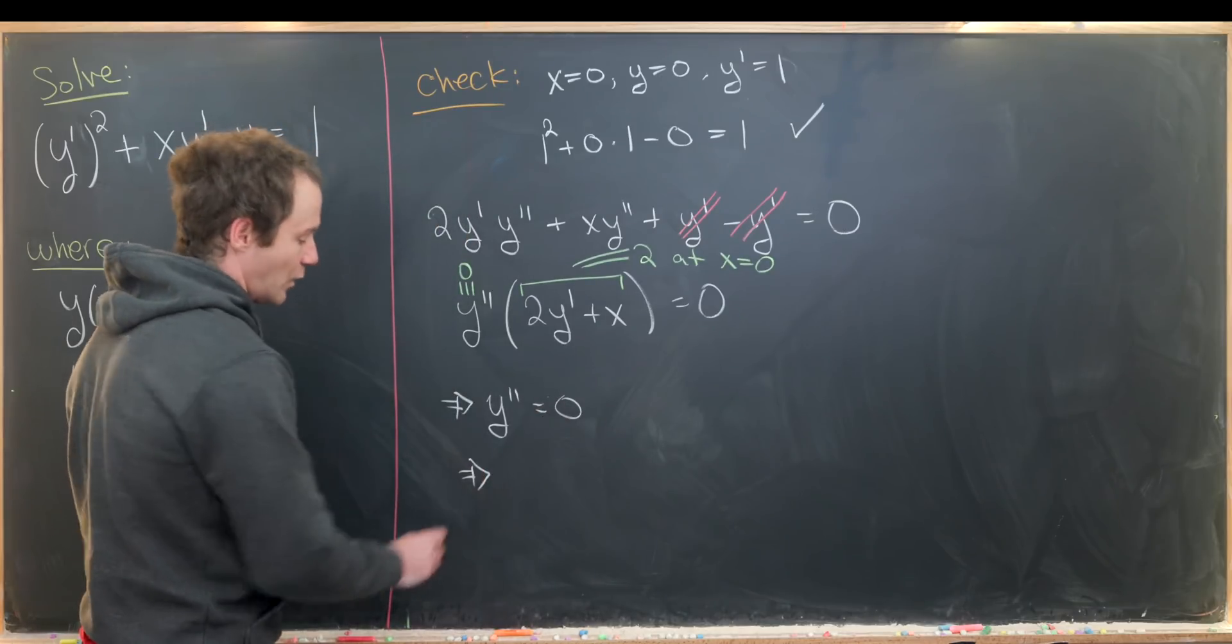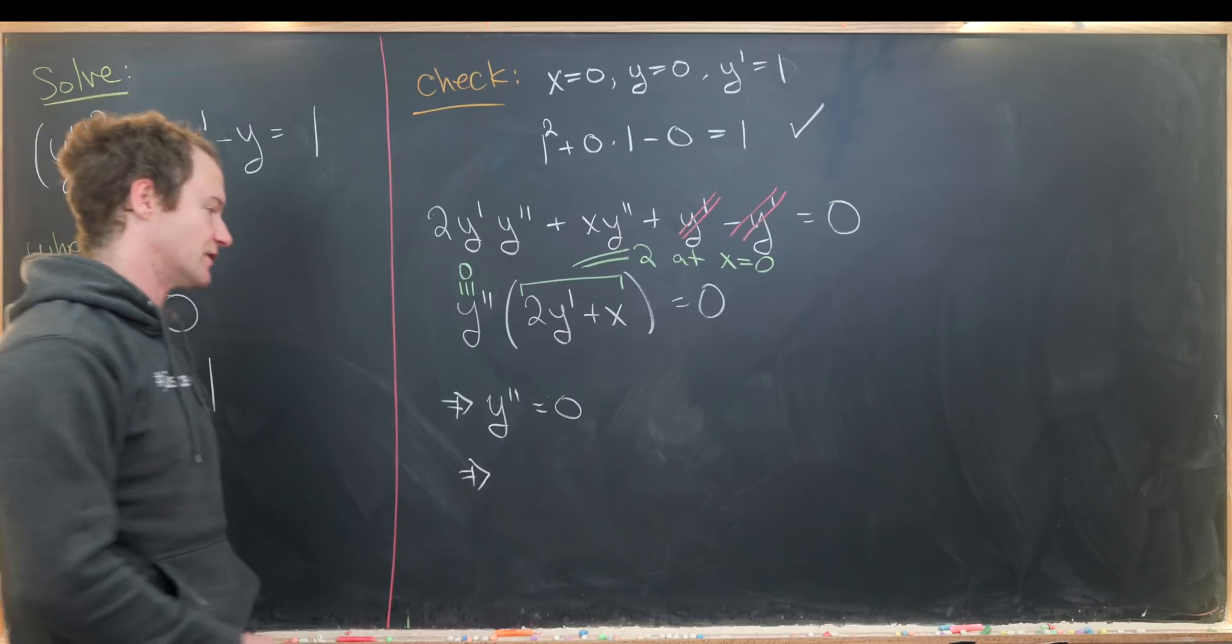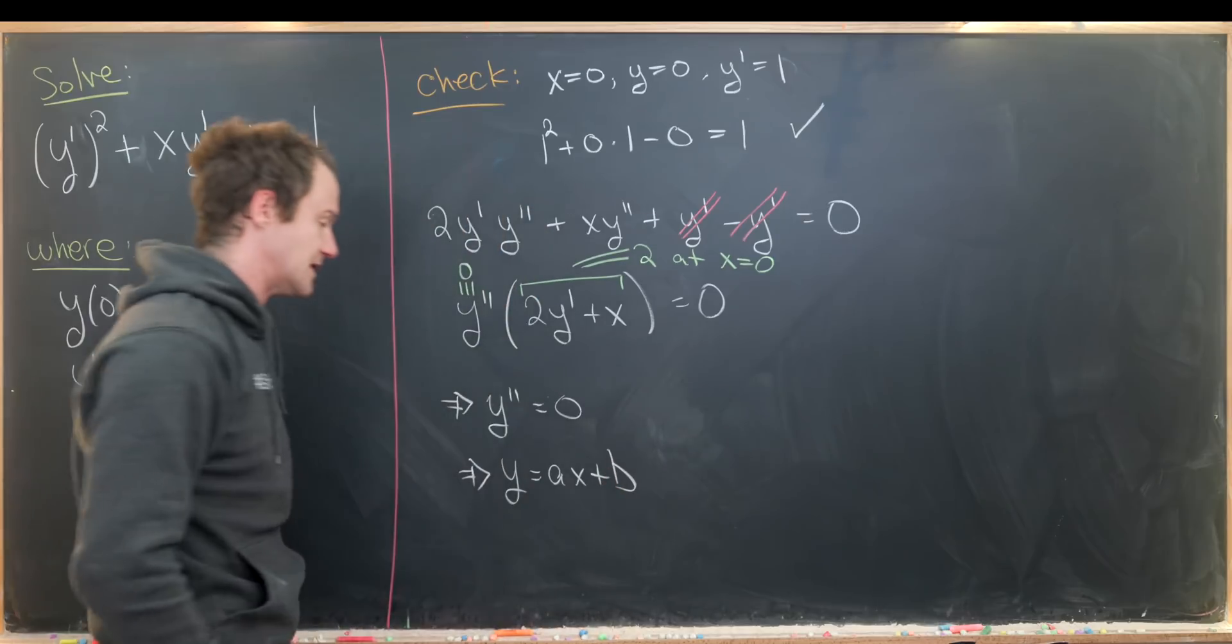But that means that y is a linear function, which we can see by taking the antiderivative two times. So that'll give us y = ax + b.